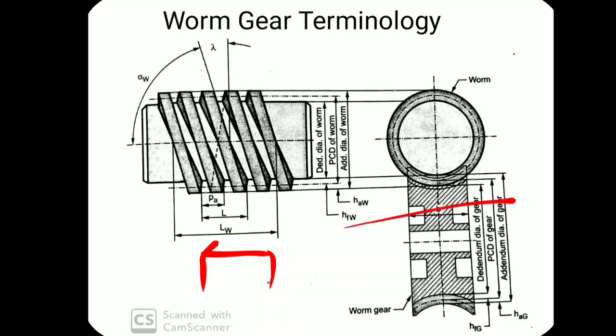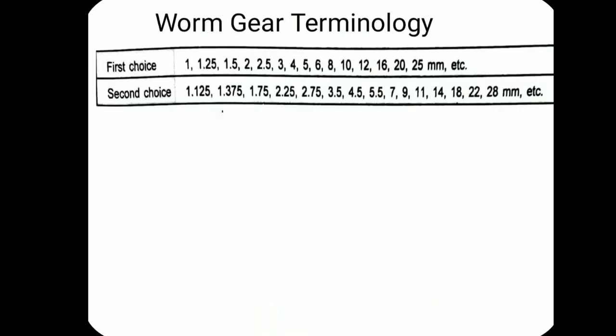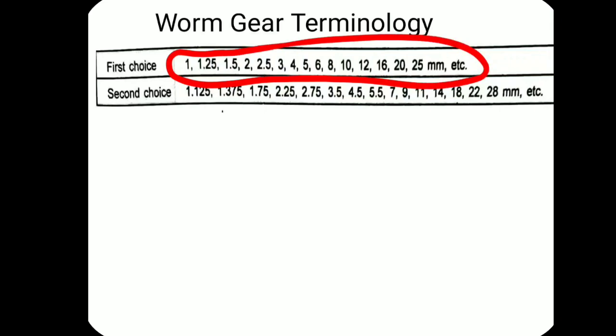That will be corrected. The next part is the number of states. The module choice can be mentioned as 1.25, 1.5, 2, 2.5, 3, 4, 5, 6, 8, 10, 12. Up to 12 is sufficient. We can calculate the module like a previous gear arrangement.